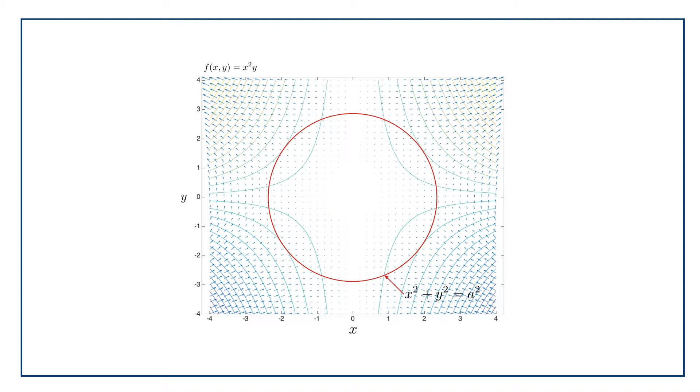Now you can imagine that describing an equation for how x squared y varies as I go around a circular path is going to be a complete nightmare. But that's not the question we are actually asked. What we wanted to know was what's the maximum along that circle, not what's the value everywhere on the circle.